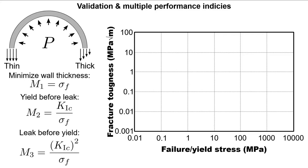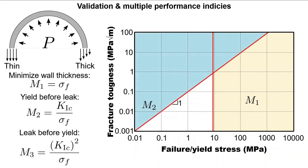Plotting the logarithmic relationship between fracture toughness and the failure or yield stress, we can apply the same approaches as before. Starting first with M1, having a yield strength greater than a particular value, all of the materials that correspond to this. Next, we can apply M2. This further constrains the material choices. Finally, we can apply M3.